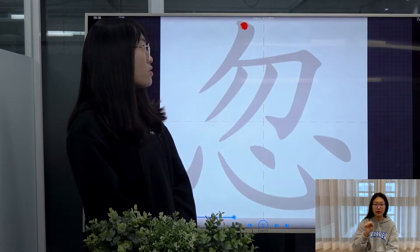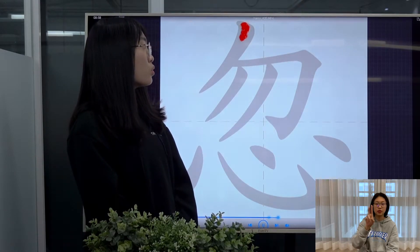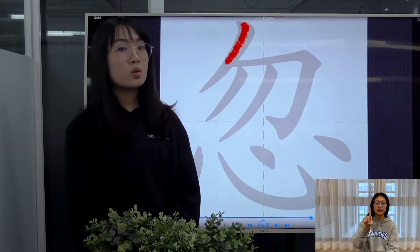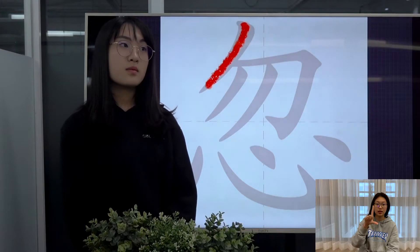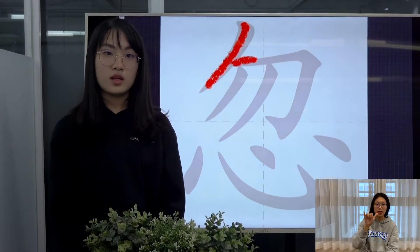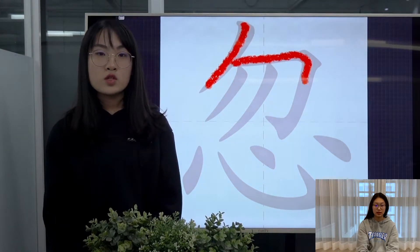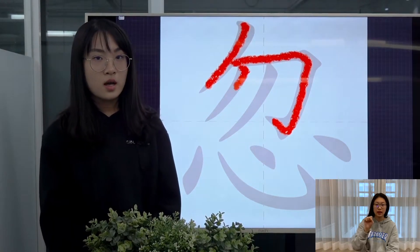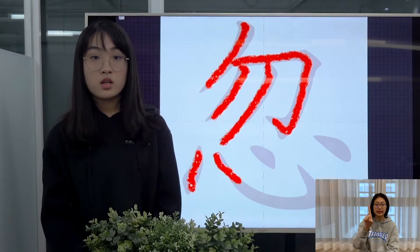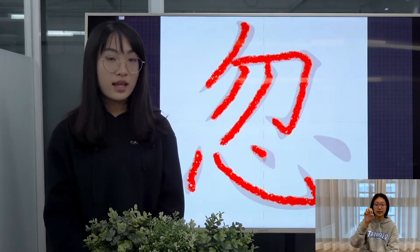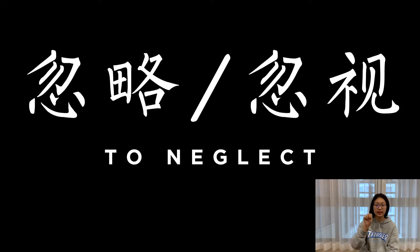This character is pronounced as 忽. It has two meanings. The first one is when it's used as a verb, it means to neglect, as in 忽略 and 忽视.